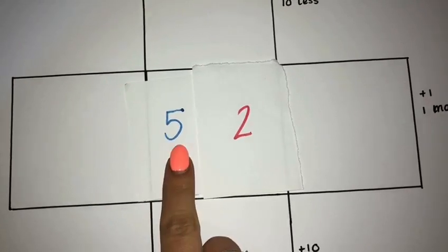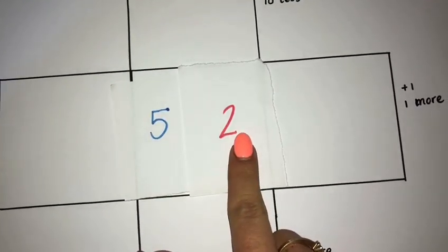Get your child to read the number. It has five tens and two ones, so it's 52.